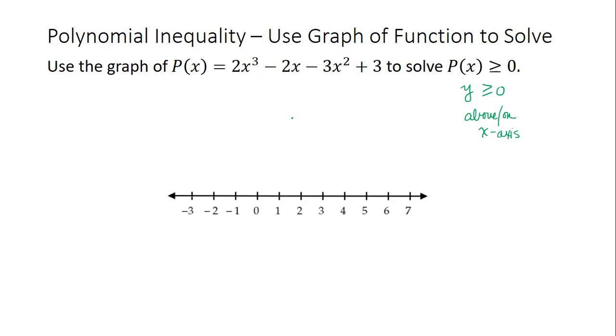We can do that by first finding the zeros, which tells us where it is on the x-axis. We set 2x³ - 2x - 3x² + 3 = 0. We have a polynomial equation to solve. We can solve it by factoring using grouping. The first two terms have 2x in common. Factoring that out leaves x² - 1.